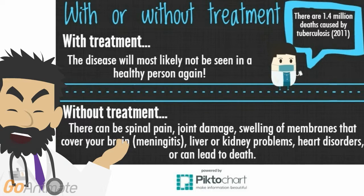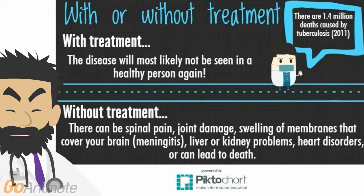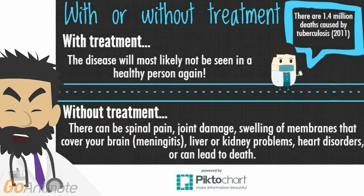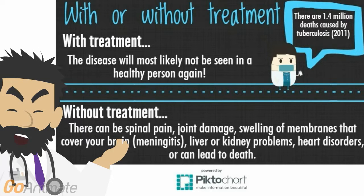One last thing and my five minutes is up. Without treatment, TB is going to be fatal. You're looking at spinal pain, joint damage, swelling of the membranes that cover your brain — that's meningitis — liver and kidney problems, and heart disorders. However, once you are treated, you are most likely not to see the disease again if you're a healthy individual.